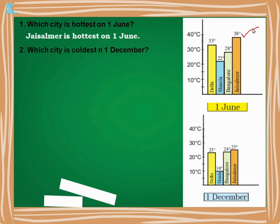Next: which city is coldest on 1st December? Coldest means the degrees Celsius will be the lowest. The lowest value is 10 degrees, and that is Shimla. So Shimla is the coldest city on 1st December.